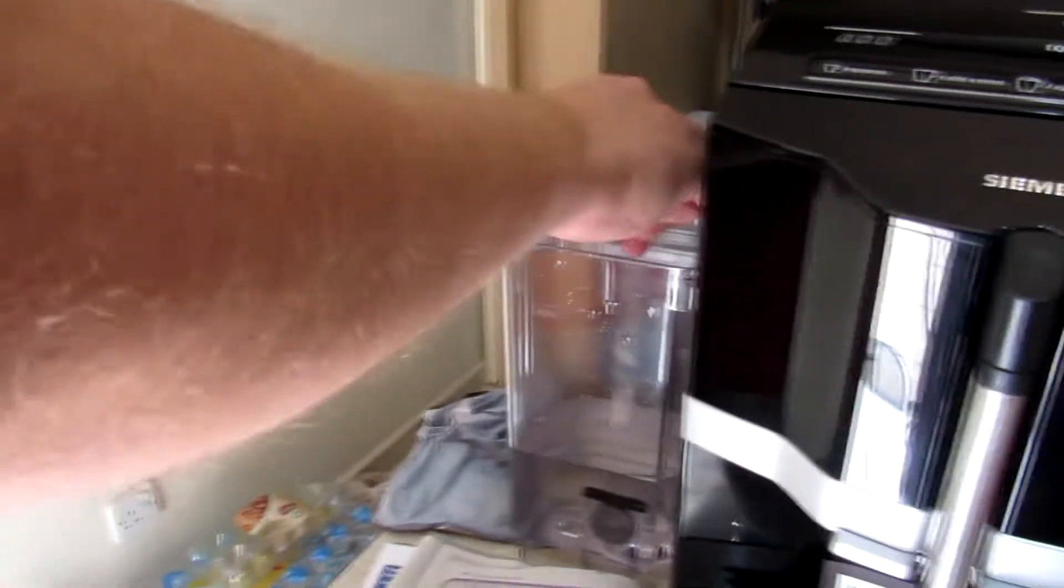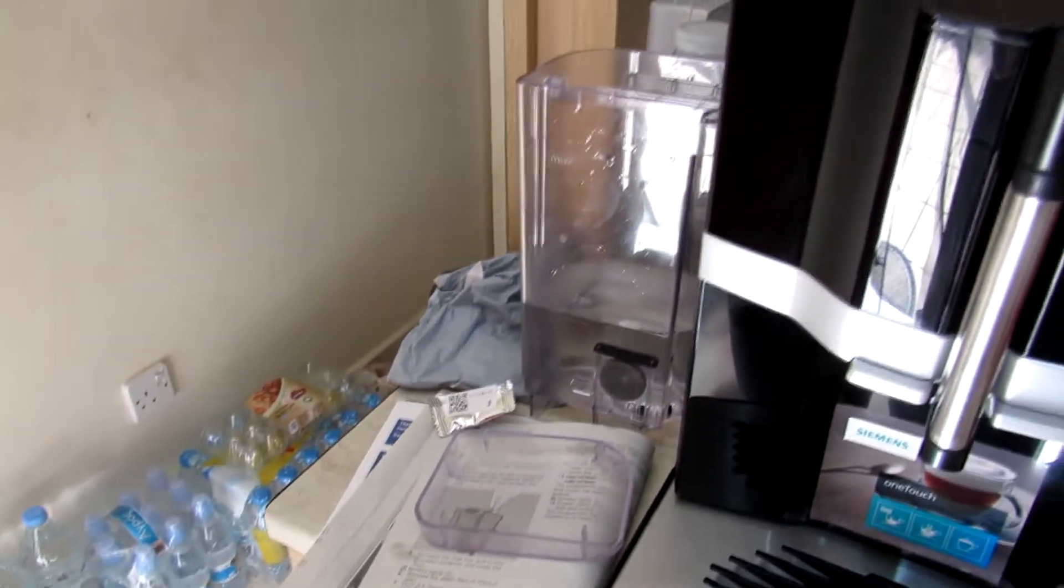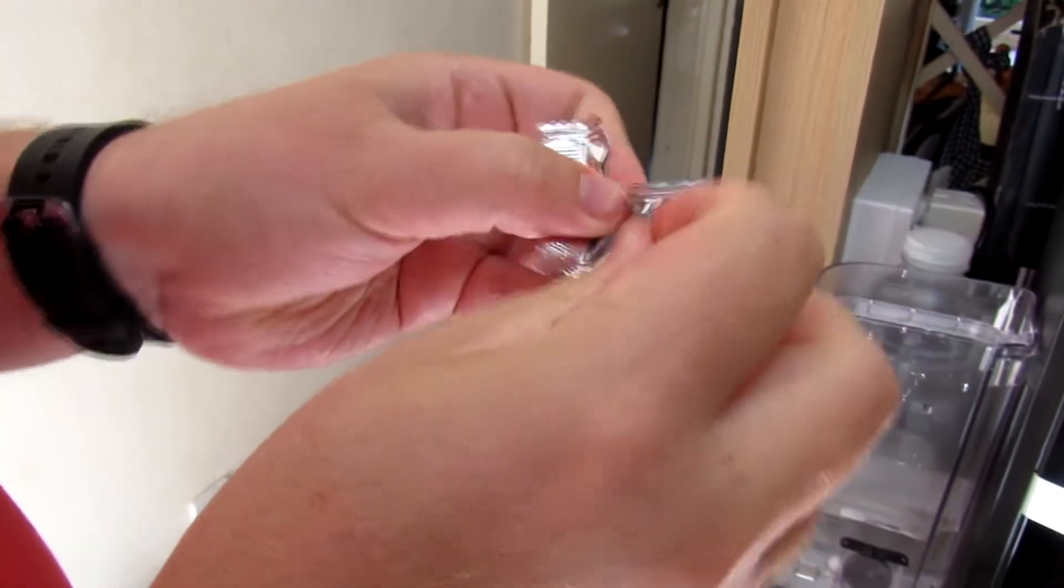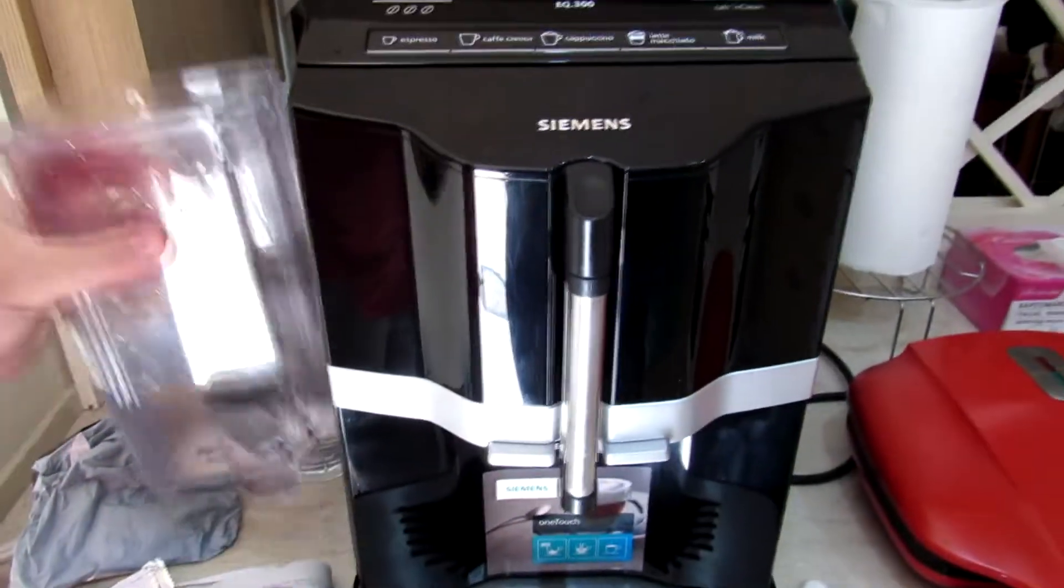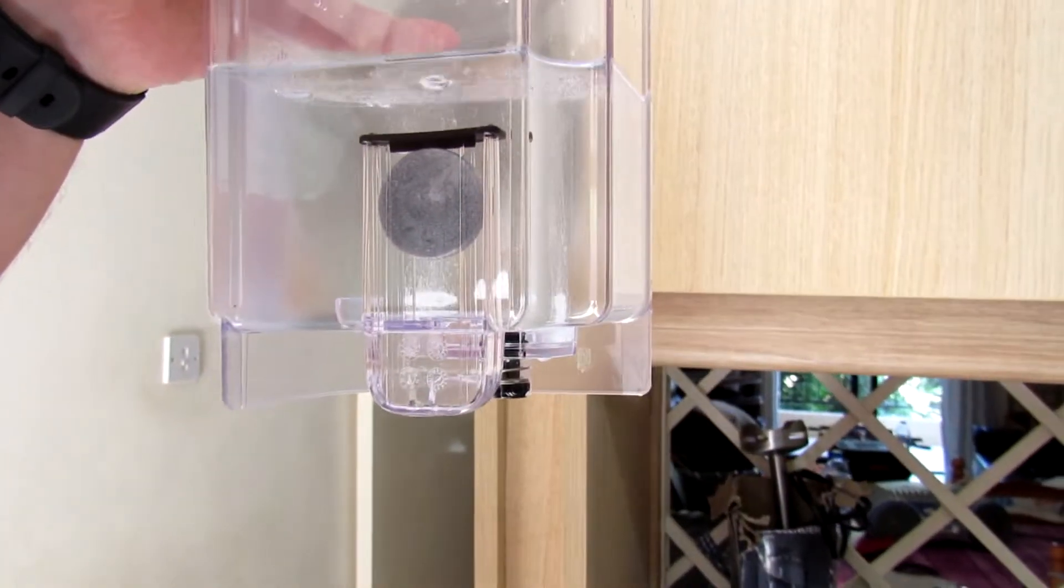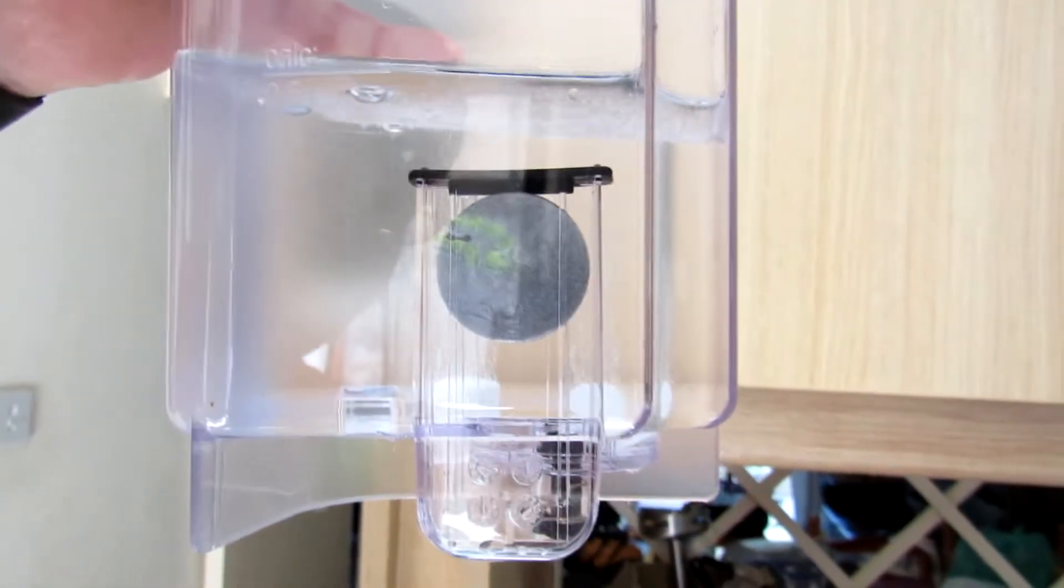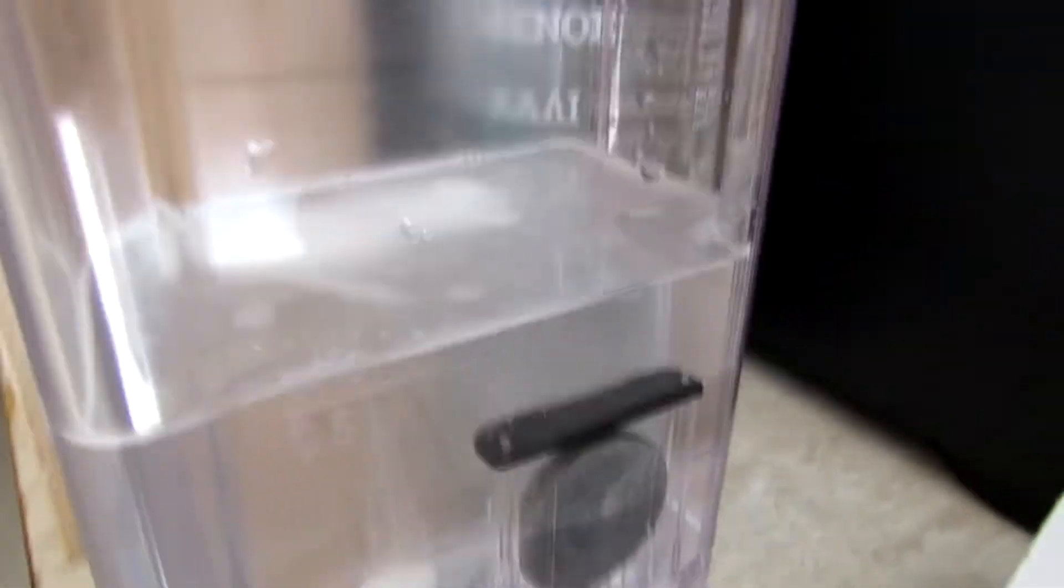Dissolve two pills of descaling tablets for automatic coffee. One pill, two pills. You see how this pill is dissolving? They must be dissolved completely. One tablet is fully dissolved and second one is almost dissolved too. We proceed with that.